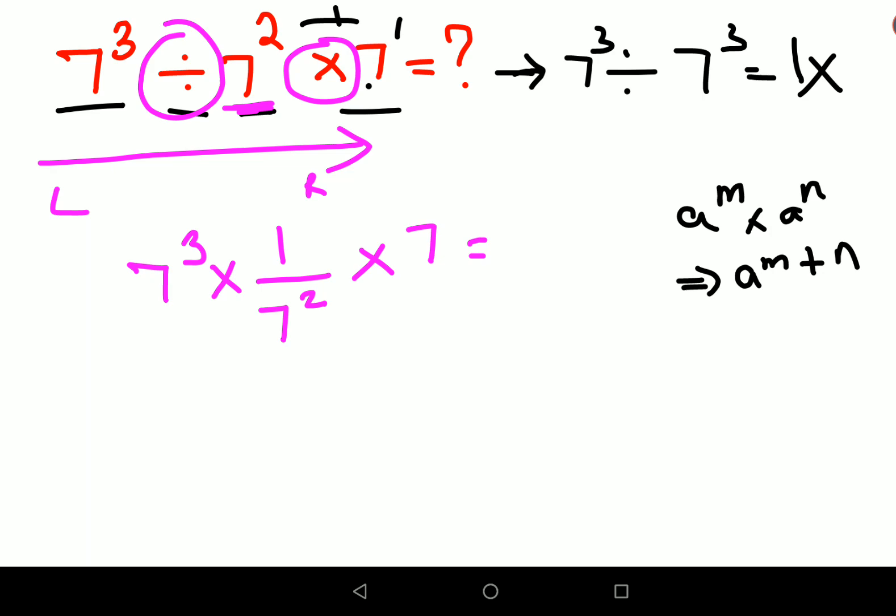So here you can now cancel 7 cube and 7 square, which becomes 7 raised to 1.